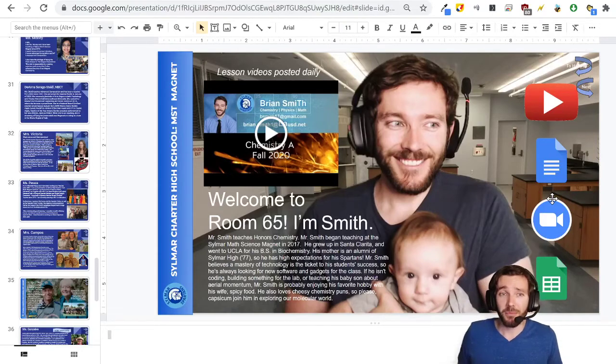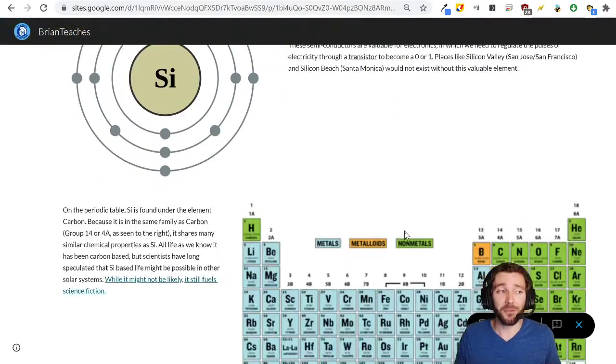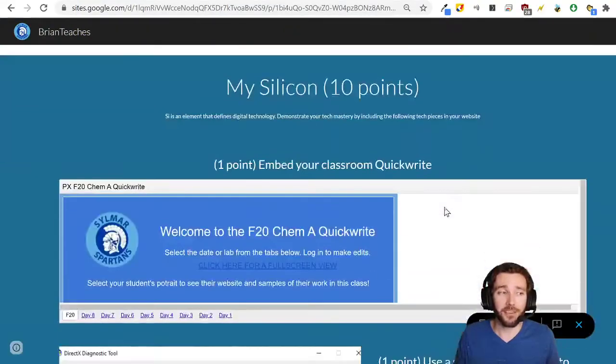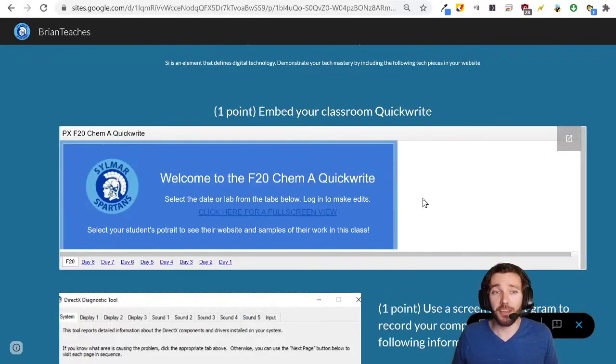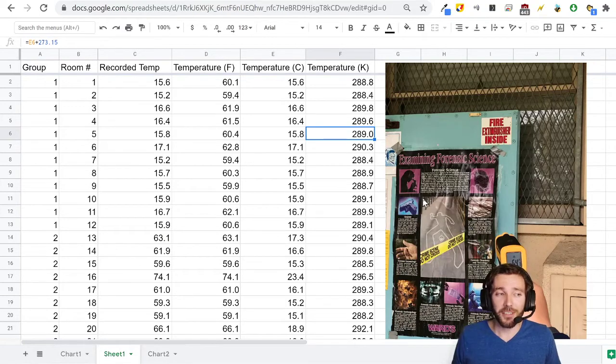That means they're going to be doing a lot of work with things like Google Sites. This is a chemistry-themed Google site that they'll be working on in my class that has a lot of material. They'll be working with things like Google Sheets. Here is a collaborative project that the students did.